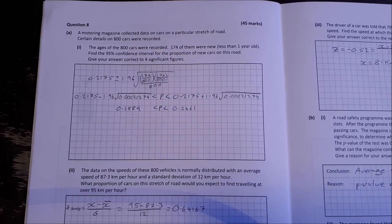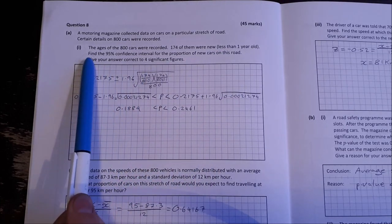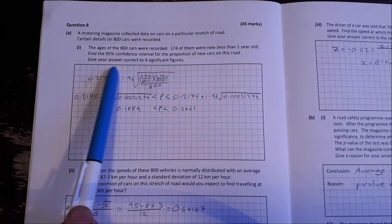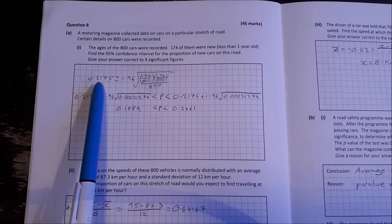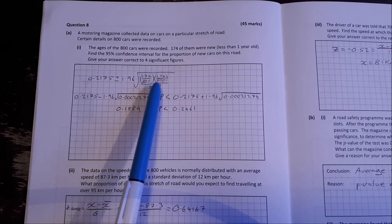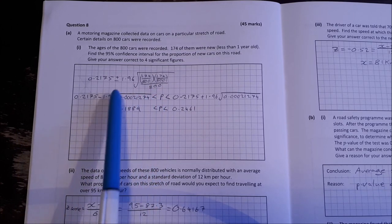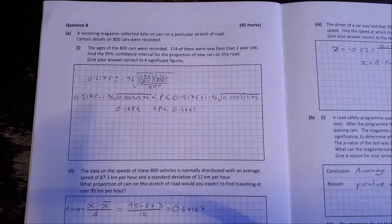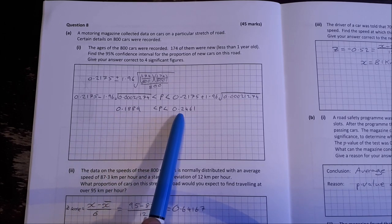Question 8. A motoring magazine collected data on cars on a particular stretch of road. Certain details on 800 cars were recorded. The ages of the 800 cars were recorded. 174 of them were new, less than a year. Find a 95% confidence interval for the proportion of new cars on this road. Give your answer correct to 4 significant figures. So we set up our confidence interval here. It's 0.2175 plus 1.96 times the square root of 174 over 800 times 174 over 800 all over 800. So we'll have plus or minus to end up with 0.1889 less than p less than 0.2461.